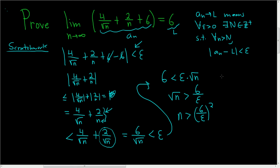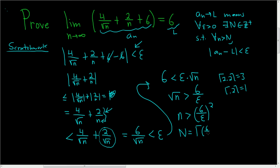Here's how we'll do it. We're going to use something called the ceiling function. What's the ceiling function? If you take the ceiling of 2.2, you get 3. If you take the ceiling of 0.2, you get 1. So it just rounds up whatever you put in there. We're going to take capital N to be equal to the ceiling function of (6/epsilon) squared.